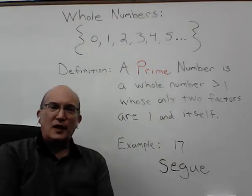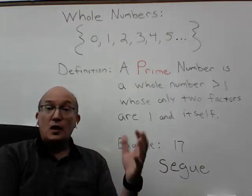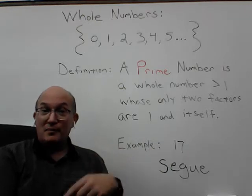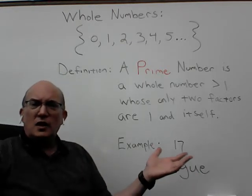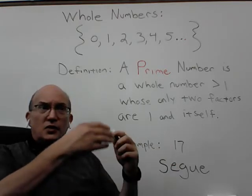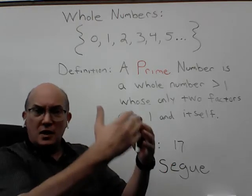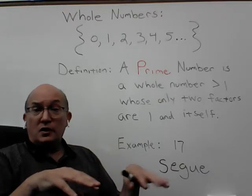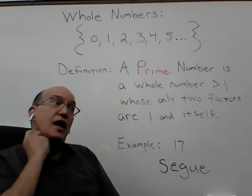Hello fifth graders. In the previous video, which was about the factors and multiples of whole numbers, I chose as a segue from that video to this video the number 17. Here is how we spell that word. I looked up its definition and it seems to be specific to music or drama — a segue in music is where a piece of music blends naturally into another, but the word is used more generally to mean anything that introduces or leads into something else.